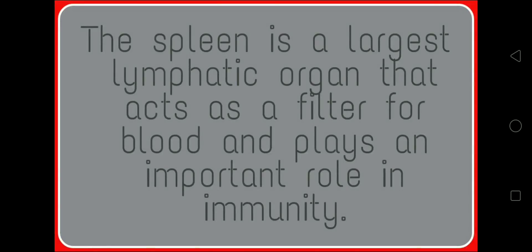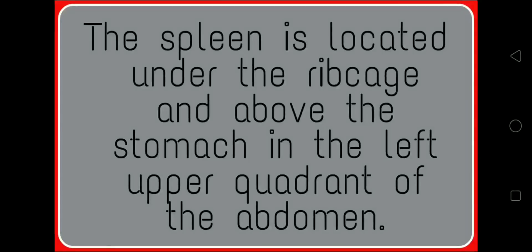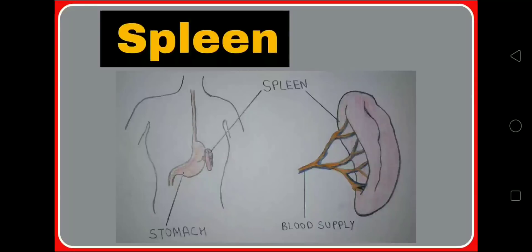The spleen is the largest lymphatic organ that acts as a filter for blood and plays an important role in immunity. The spleen is located under the ribcage and above the stomach in the left upper quadrant of the abdomen. Please see the location of the spleen as shown in the diagram.